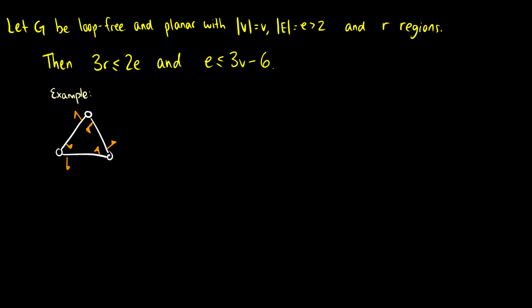This does not have to be a planar embedding. G is a loop-free planar graph with the number of vertices equal to V, the number of edges greater than 2, and our regions. Then three times the number of regions is going to be less than or equal to two times the number of edges, and the number of edges is going to be less than or equal to three times the number of vertices minus six.